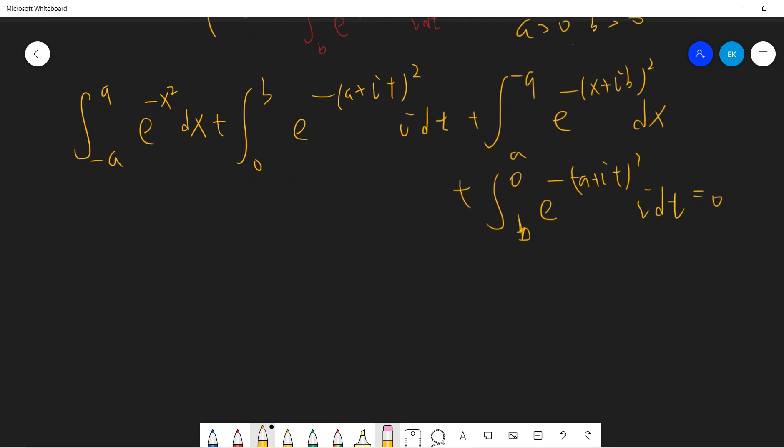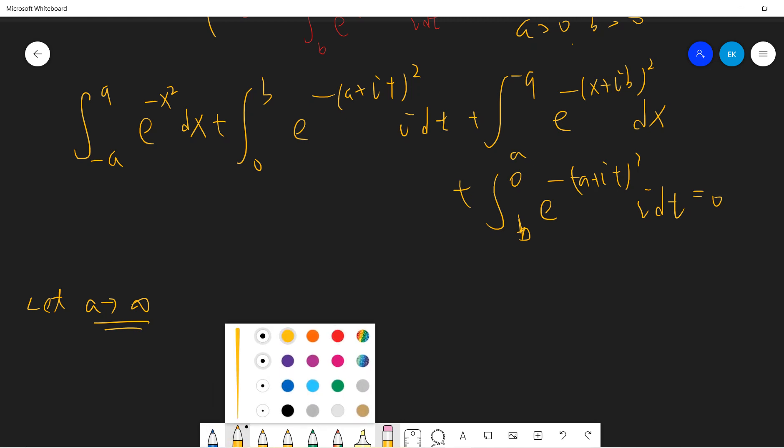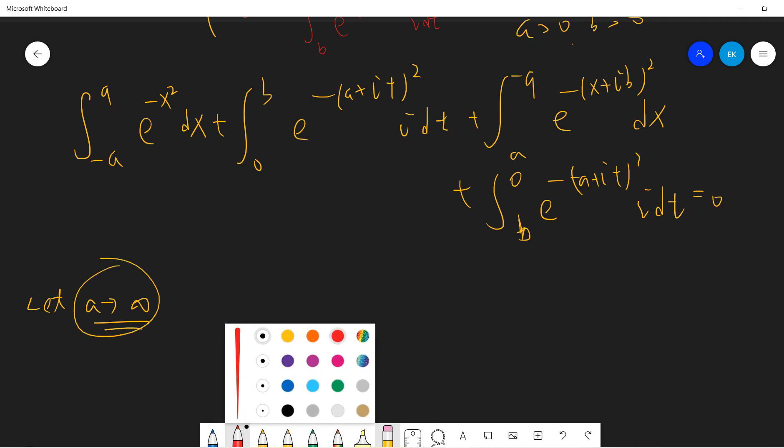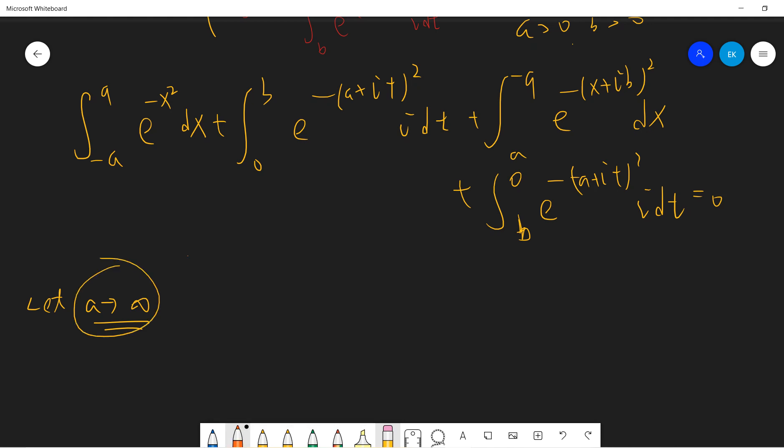Next is to let a go to infinity. Since we are going to do infinity, and we're doing a complex integration, usually we need to do infinity. So let's say if a goes to infinity, then what will happen? Maybe change color.